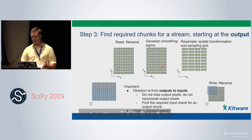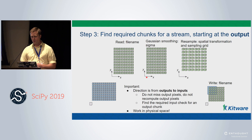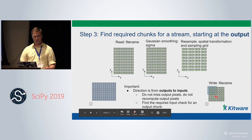We don't really know, especially if it's a large complicated pipeline, where we should compute our data. If we just do it naively and chunk everything on the input, maybe we won't produce all the output pixels, or maybe we'll recompute some of them. So we start at the end of the pipeline, start with a chunk, and figure out what corresponds to that area in the resampled image.